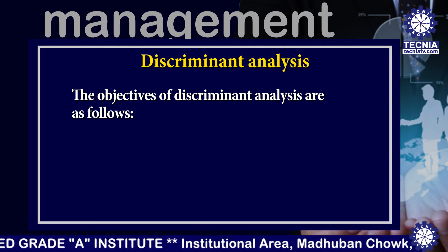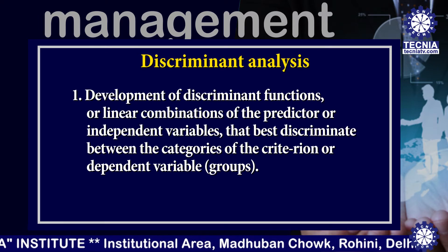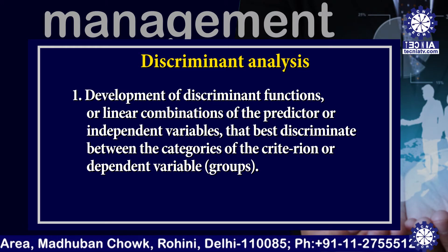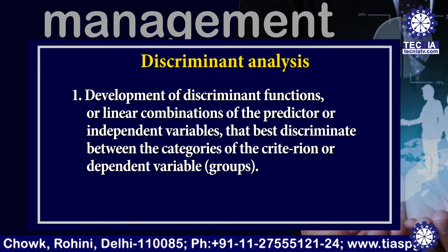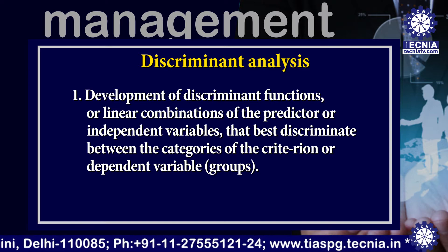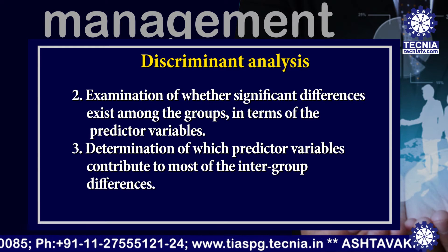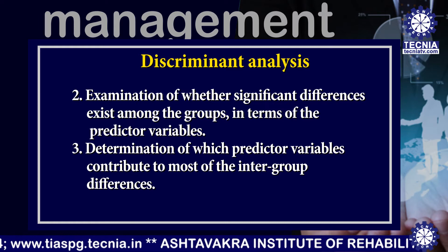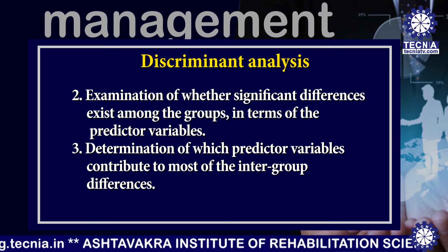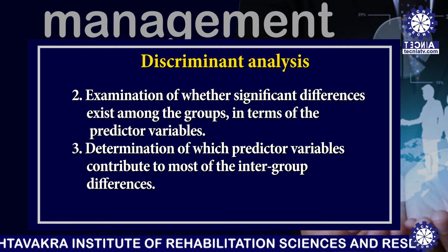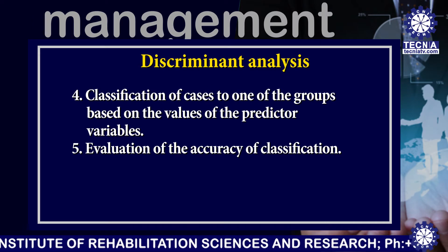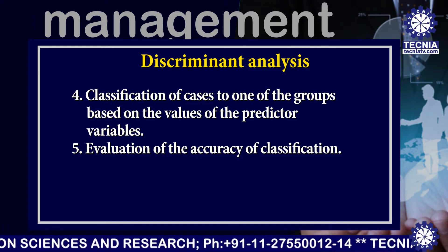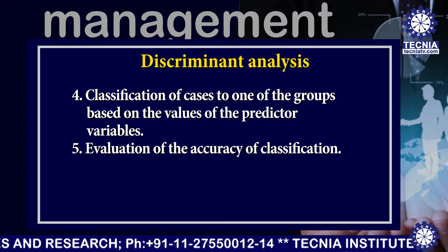The objectives of discriminant analysis are as follows. First, development of discriminant functions or linear combinations of the predictor or independent variables that best discriminate between the categories of the criteria or dependent variable. Second, examination of whether significant differences exist among the groups in terms of the predictor variables. Third, determination of which predictor variables contribute most to the intergroup differences. Fourth, classification of cases to one of the groups based on the value of the predictor variables. Fifth, evaluation of the accuracy of classification.